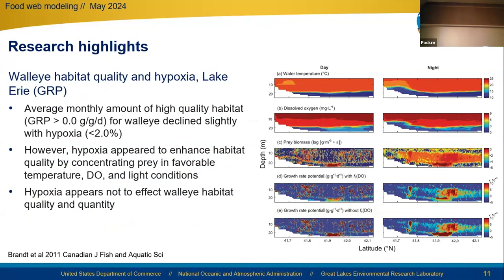Moving on to quantifying habitat quality and quantity for walleye in Lake Erie in response to hypoxia, using a spatially explicit model of growth rate potential. Shown here are transects collected in the central basin using a towed vehicle with CTD and fisheries acoustics. From top to bottom: water temperature, dissolved oxygen, prey fish biomass, growth rate potential with hypoxia, and growth rate potential assuming no low dissolved oxygen. Good habitat is defined as growth rate potential greater than zero grams per gram per day. We found the average monthly quantity of high-quality habitat for walleye declined slightly by about 2% due to hypoxia, but hypoxia appeared to enhance habitat quality by concentrating prey in favorable temperature, dissolved oxygen, and light conditions.